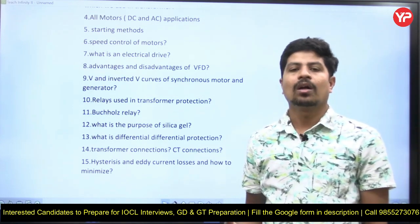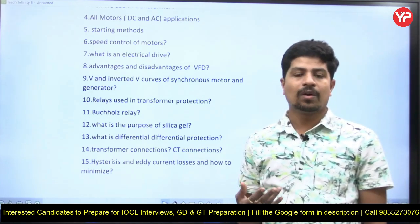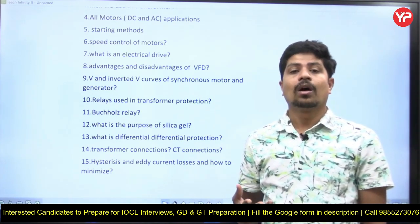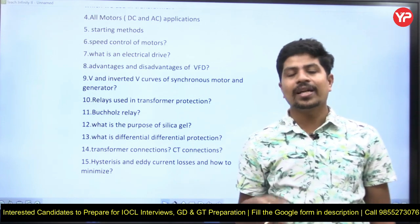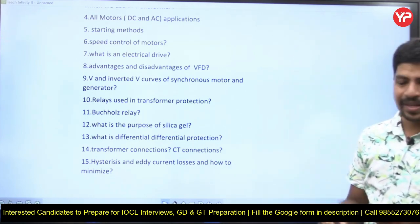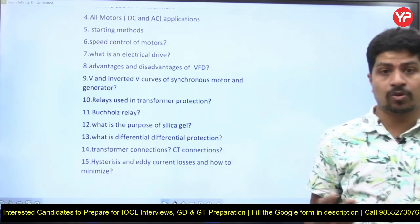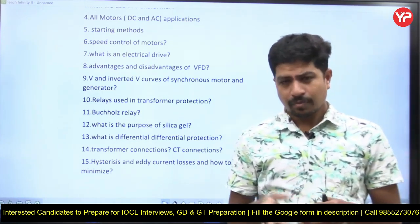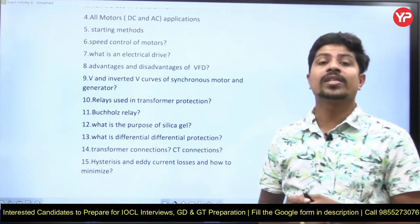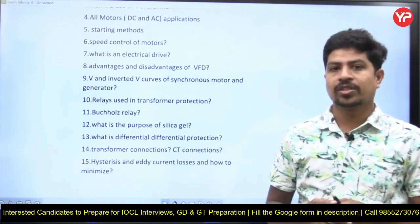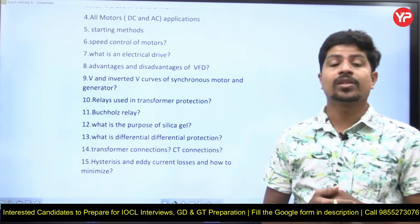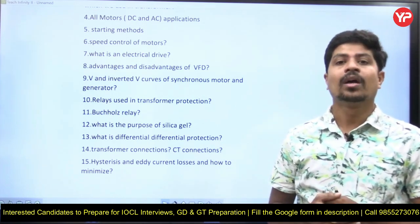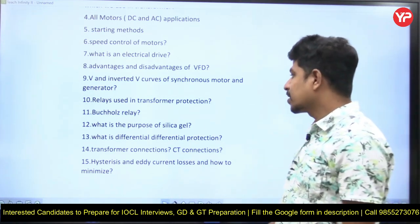The next topic is relays used in transformer protection. For protection of the transformer winding, we use certain relays, and we also use the Buchholz relay to monitor the level of oil in the transformer. Questions on differential protection — what it is, its advantages and disadvantages, bias differential protection, and why we move from differential to bias differential protection — are all important. CT (Current Transformer) is also very important in practical scenarios.